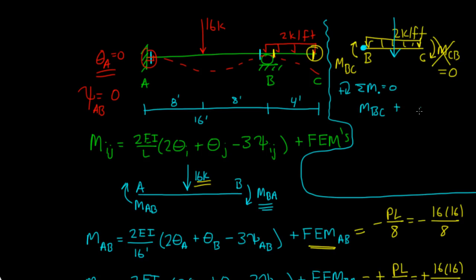It's plus the distributed load times the length, which is 4, times the distance to the centroid of this, and since BC is 4, half of that is 2. So if I solve this out, I'm going to get MBC is equal to negative 8 kip foot. So we can actually figure out what MBC is without the use of this very long equation.